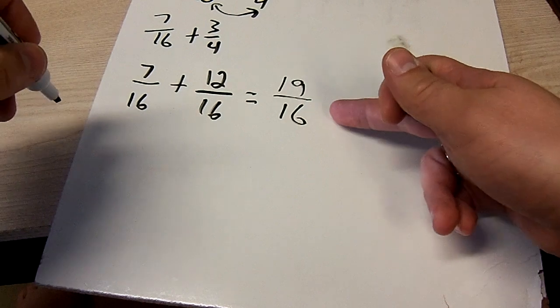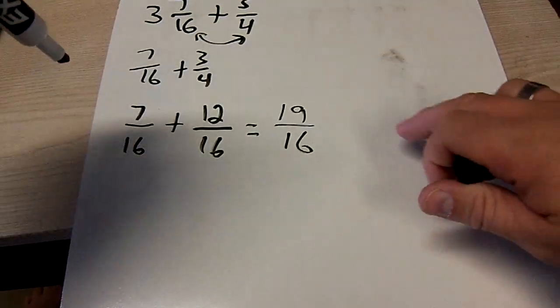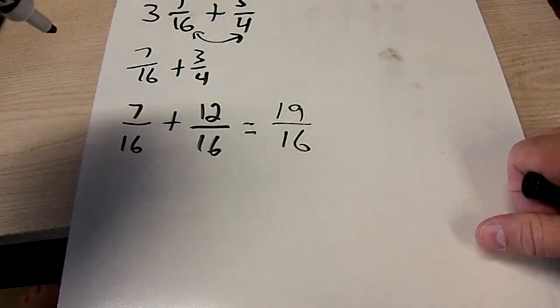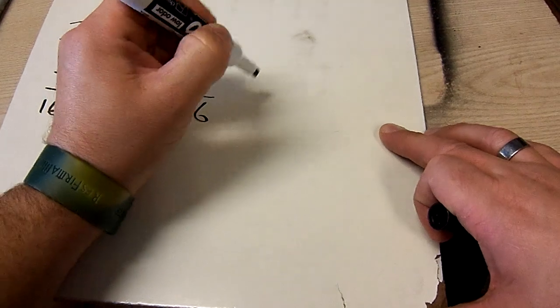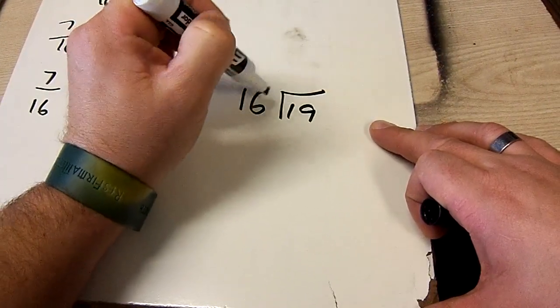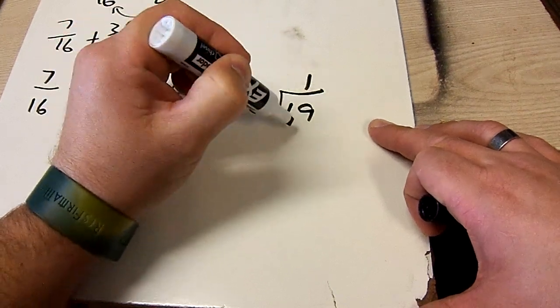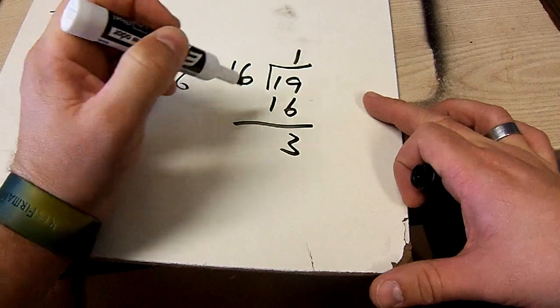So that's going to be your new dimension plus the original 3 inches from up at the top. Now the problem with that is that this is an improper fraction. So to change those, we're going to be doing 16 into 19. 16 goes into 19 one time, 16 times 1 is 16, subtract, and then you have 3.